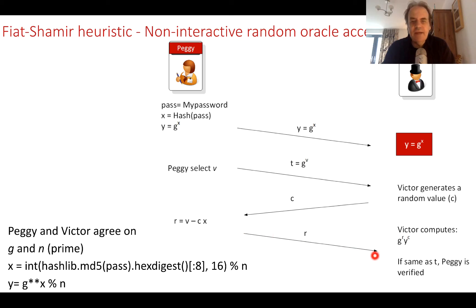Victor calculates g to the power of r and y to the power of c. If this value equals the value that was sent over, then everything is okay.